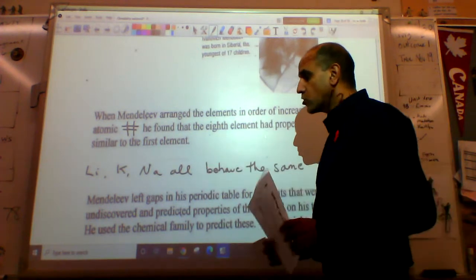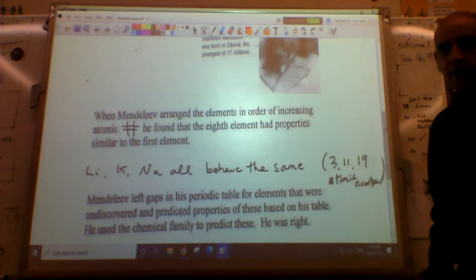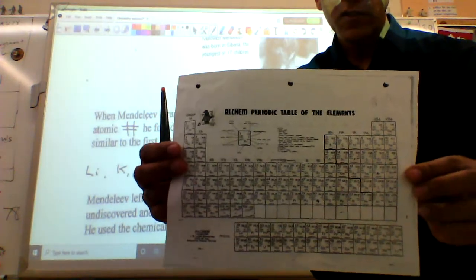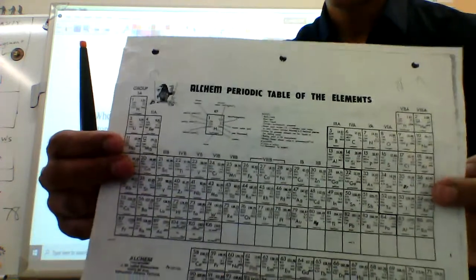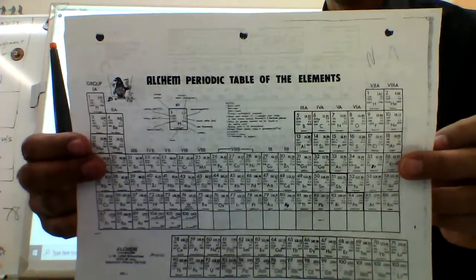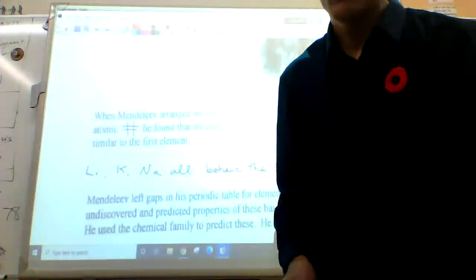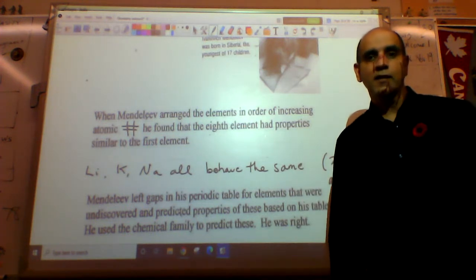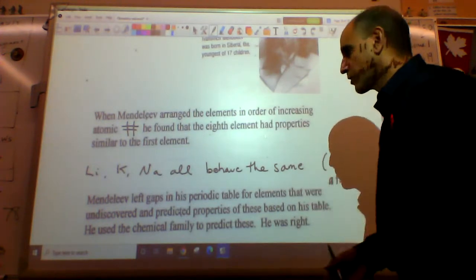He arranged the elements in order of increasing atomic number and found that every eighth element had properties similar to the first. Here in your notes is where I got rid of all this - I copied some stuff out of the book, it was wrong, I'm sorry. You should do those notes that lithium, potassium, sodium all behave the same way. That's atomic number 3, 11, and 19. I've got my periodic table here. There's one side periodic table of elements and another side periodic table of ions.